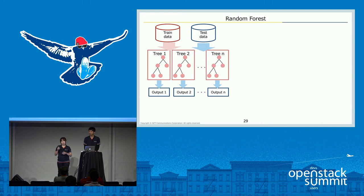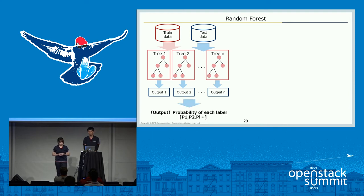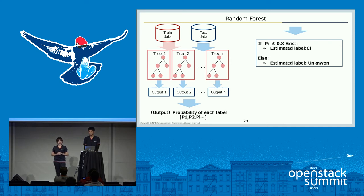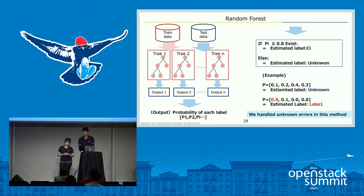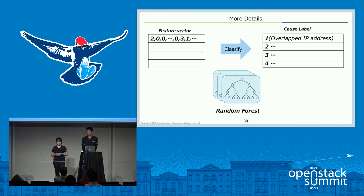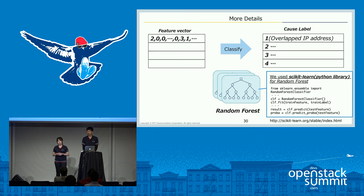However, we cannot prepare all error labels, so we must judge out-of-known errors as unknown errors. To solve this, we use the probability of each label. If there is a label whose probability exceeds 0.8, the system outputs that label as the estimation. Otherwise, the system estimates the output as unknown. For example, if probabilities are scattered, the system outputs 'unknown'; if one label's probability exceeds 0.8, that label is output. For random forest, we used scikit-learn, a Python library.